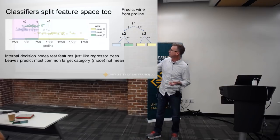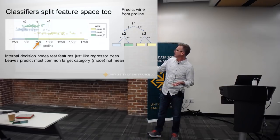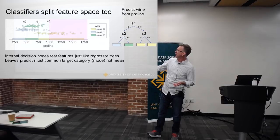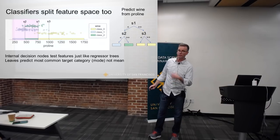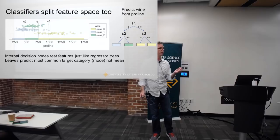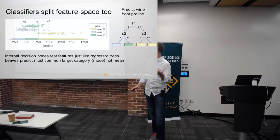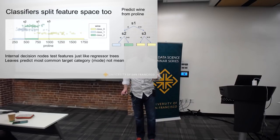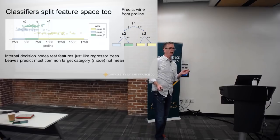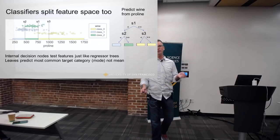I actually get a good reduction by splitting it here. Then I split it again on this side because I'm absolutely pure yellow on that side and mostly yellow here. On the other side I'm trying to do the best I can given the fact that I only have one variable.